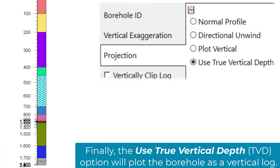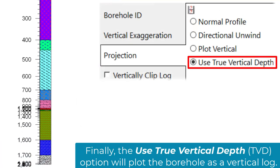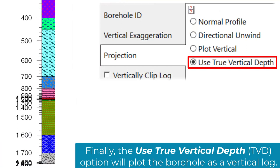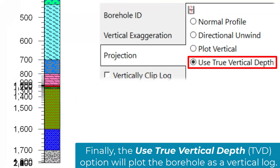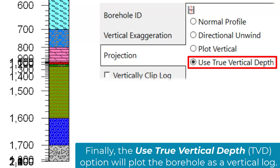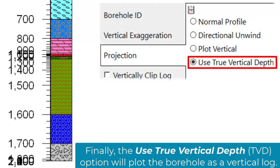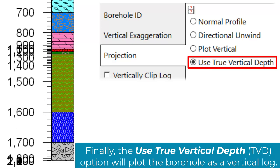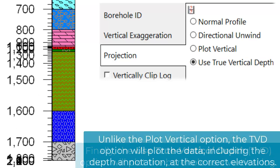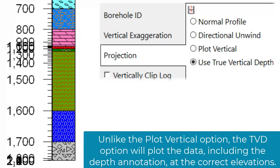Finally, the use true vertical depth or TVD option will plot the borehole as a vertical log. Unlike the plot vertical option, the TVD option will plot the data including the depth annotation at the correct elevations.